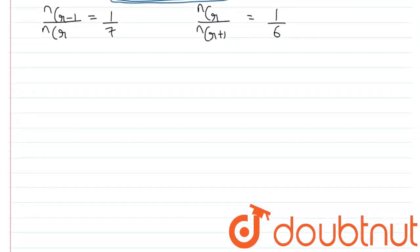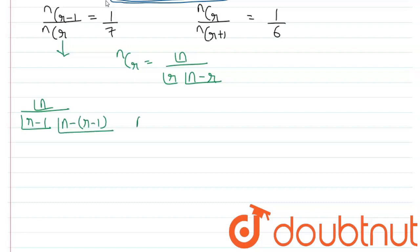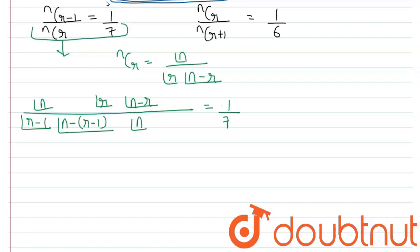Now let us use the binomial formula: nCr = n! / (r! · (n−r)!). We have n! / (r−1)! · (n−r−1)! divided by n! / (r! · (n−r)!) equals 1/7.